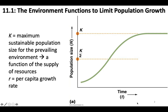Now let's talk about slightly more realistic models, because in neither of those models is there any limit on the size that a population can grow in an environment. We all know that's not true — every population of a species has a limit at which it can grow in a realistic environmental scenario. We call that limit K, which is the carrying capacity.